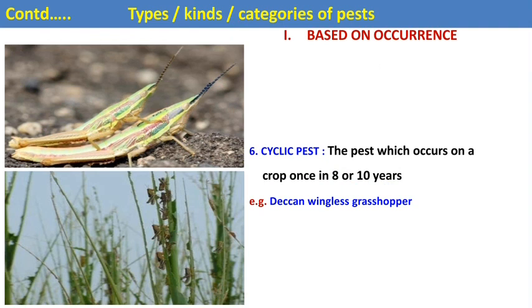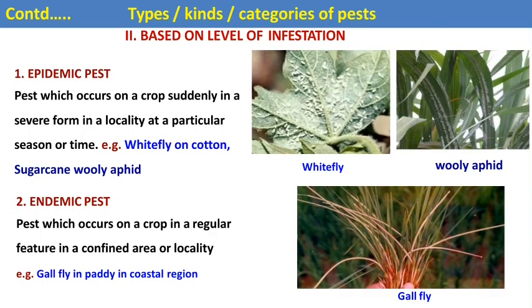The fifth is the sporadic pest — pests which occur in a few isolated localities or patches, such as gall midges and ear-head bugs on rice, and slug caterpillar on mango and custard apple. The sixth is the cyclic pest — pests which occur on a crop once in 8 to 10 years, such as the Deccan wingless grasshopper. The second category is based on level of infestation: epidemic pests occur suddenly in severe form in a locality, such as whitefly on cotton and sugarcane woolly aphid. Endemic pests occur regularly in a confined area, such as gall fly in fodder.